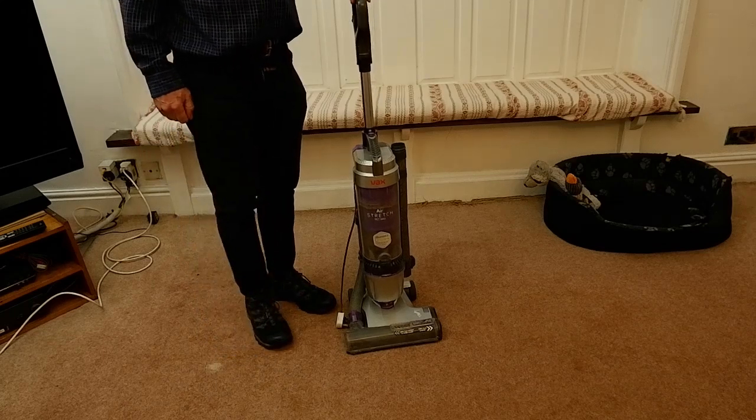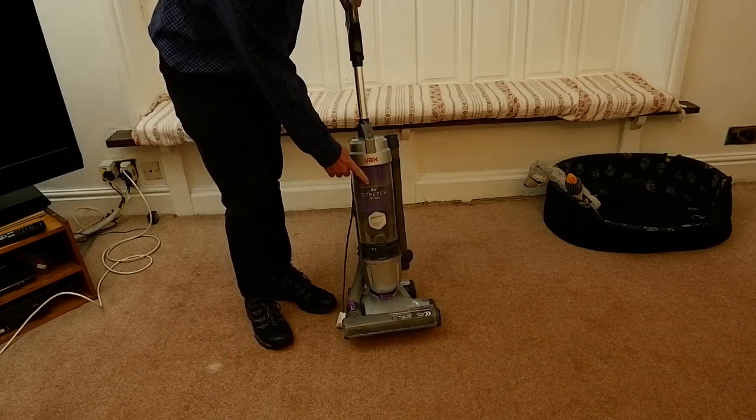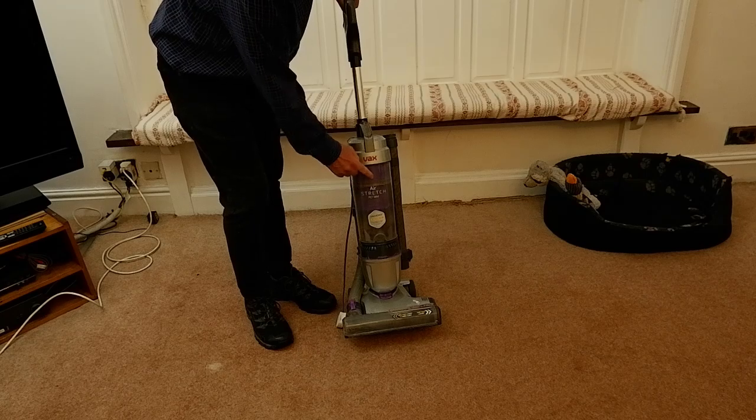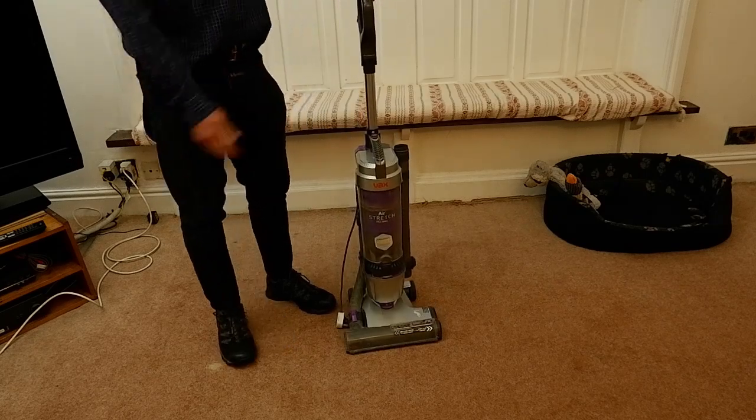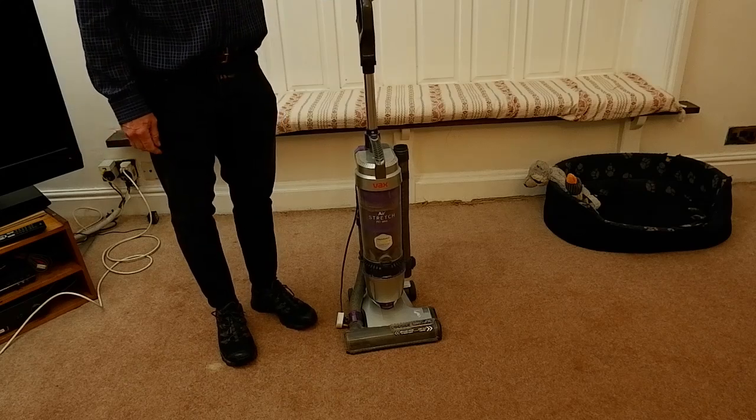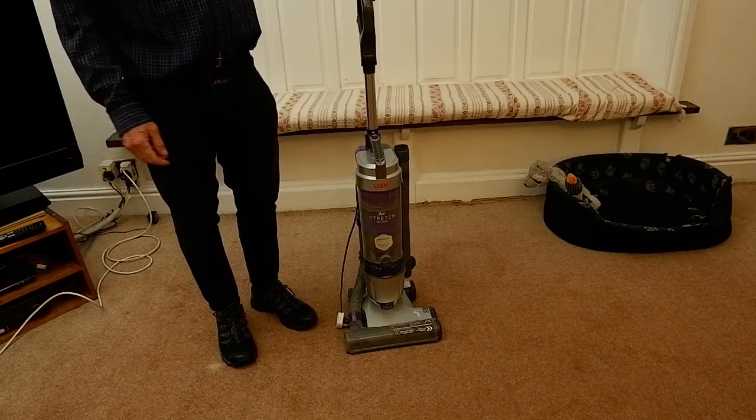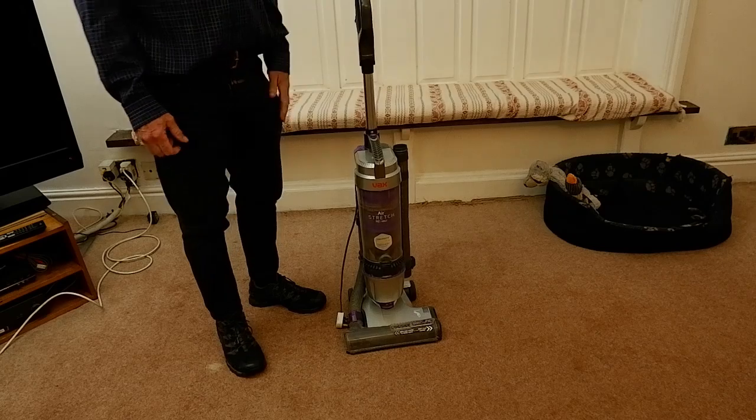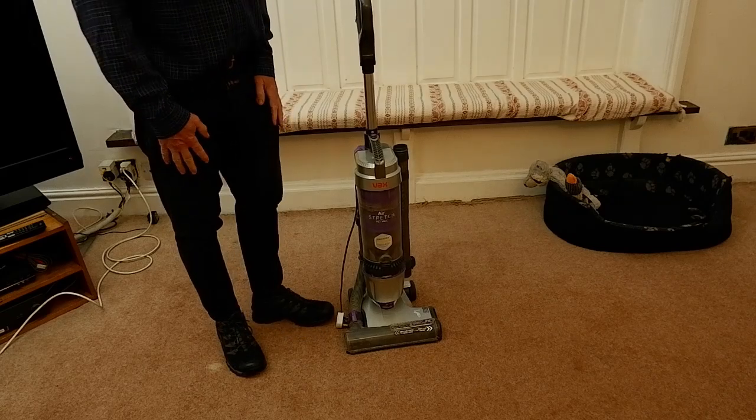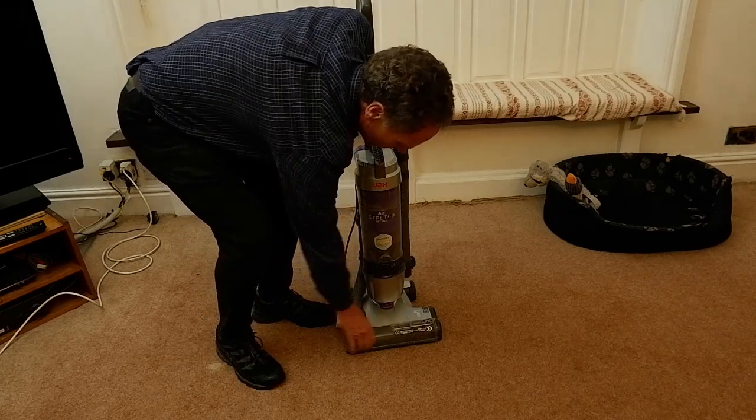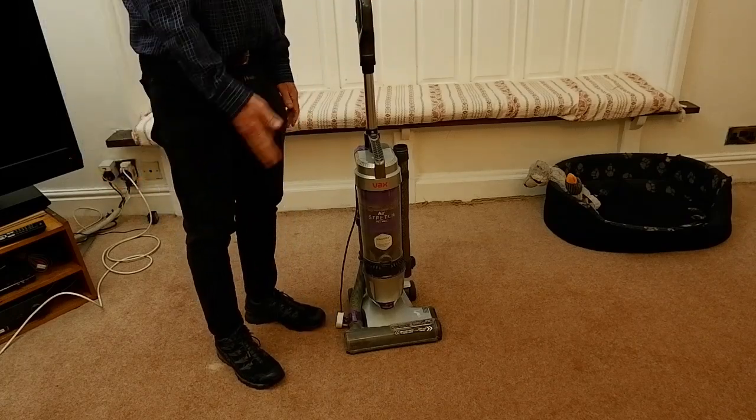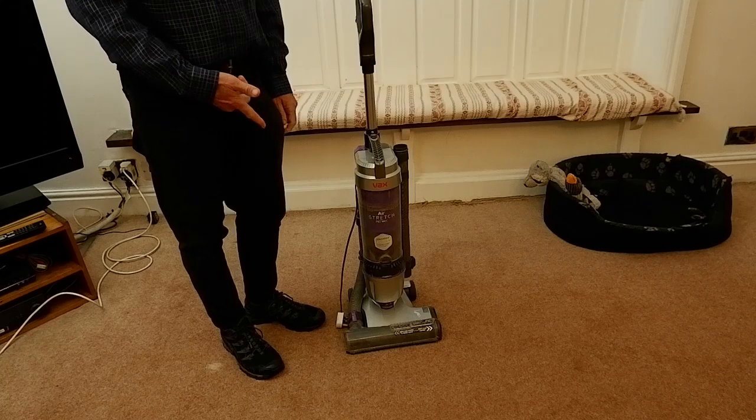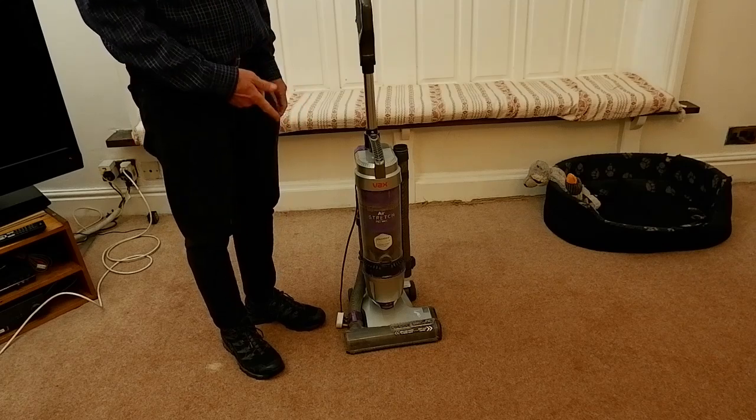So you might end up owning one of these, which is a Vax Air Stretch Pet Max vacuum cleaner. It's a Vax vacuum cleaner made for households who have pets. The reason they are suitable for pets is because it has a powerful brush down here. Now there are other models and other makes which have similar vacuum cleaners, but I'm just going to talk about a particular fault that occurs with this one and show you what to do about it.